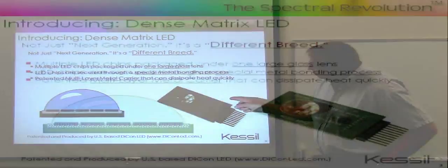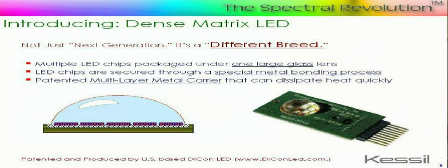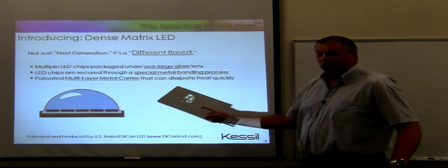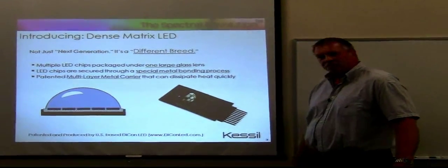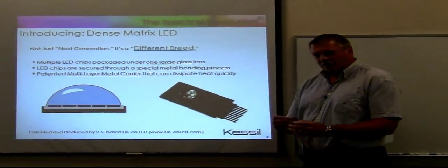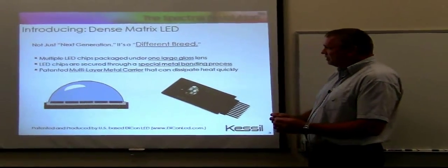In the picture shown here, this particular version of one of our dense matrix LED arrays has 21 high brightness chips, all packed tightly together in an area that's about the size of a dime. So it's a lot of light energy coming out of a small space.